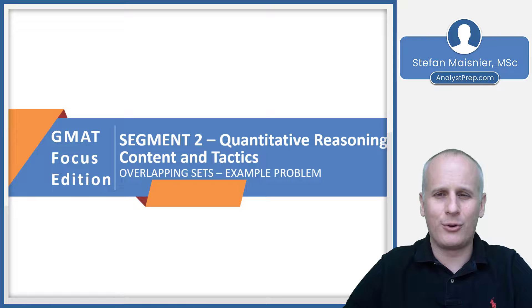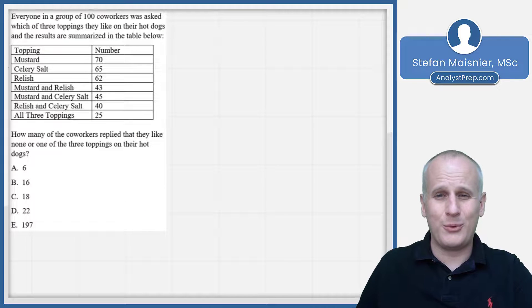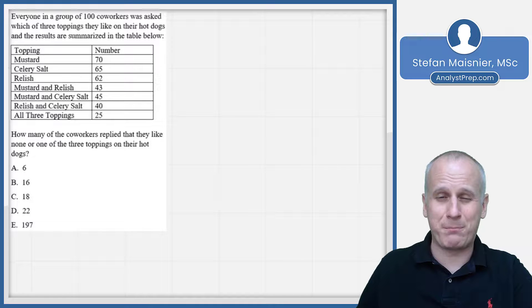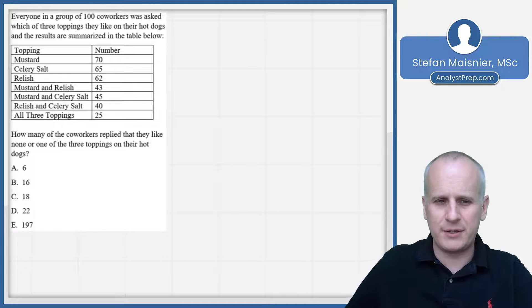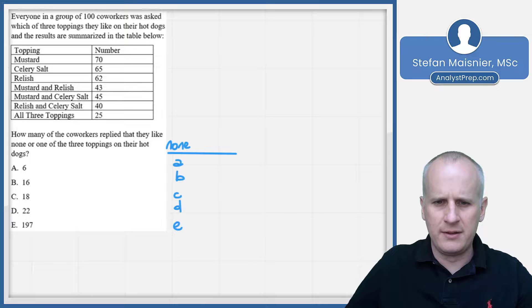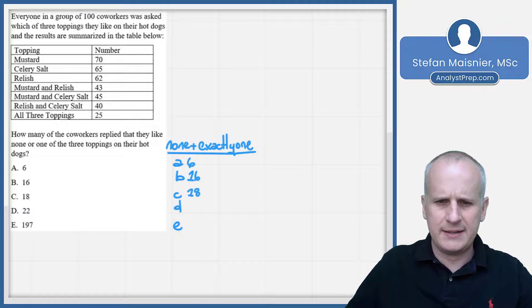We've got a little table here and we can see how complex this might get pretty quickly just at a first glance. But as always, we'll skip to the end of the problem, figure out what we're being asked to solve for. And we can see we're being asked for how many of the coworkers replied that they like none or one of the three toppings on their hot dogs. So we've got our none plus exactly one. We've got real numbers in the answer choices: six, 16, 18, 22, and 197.